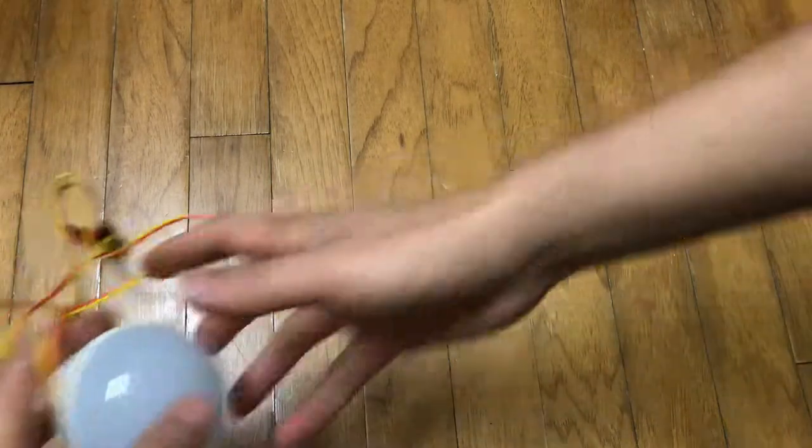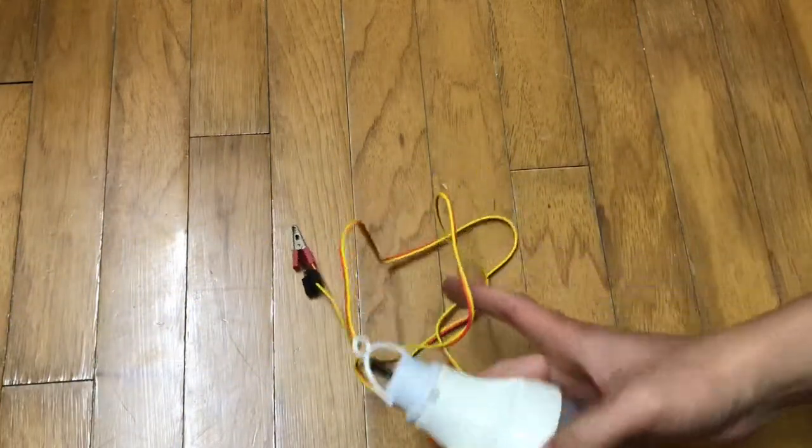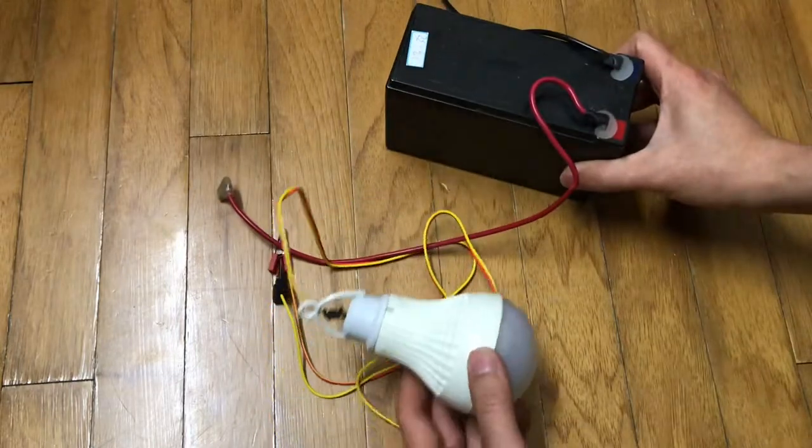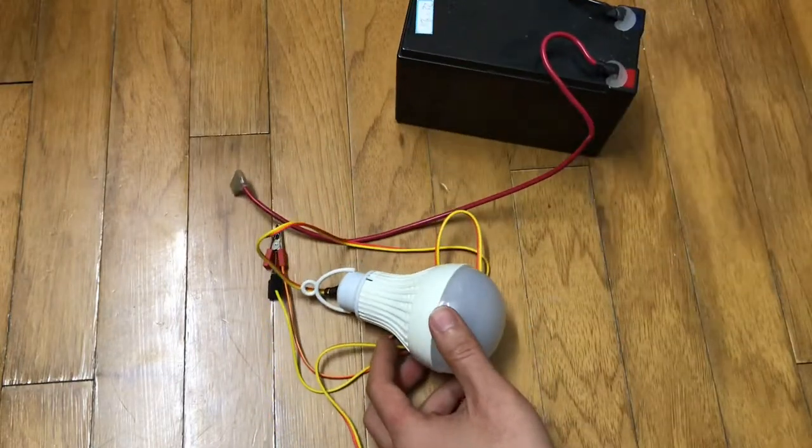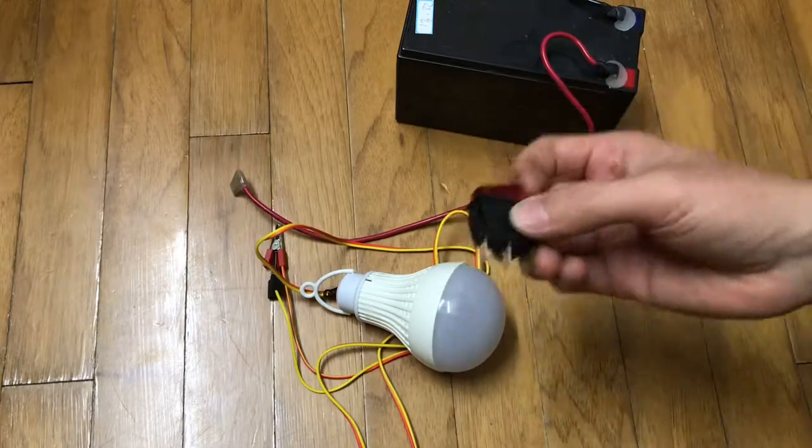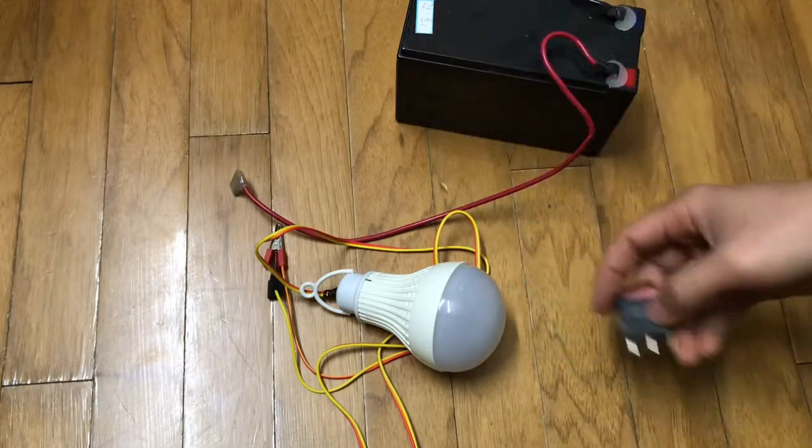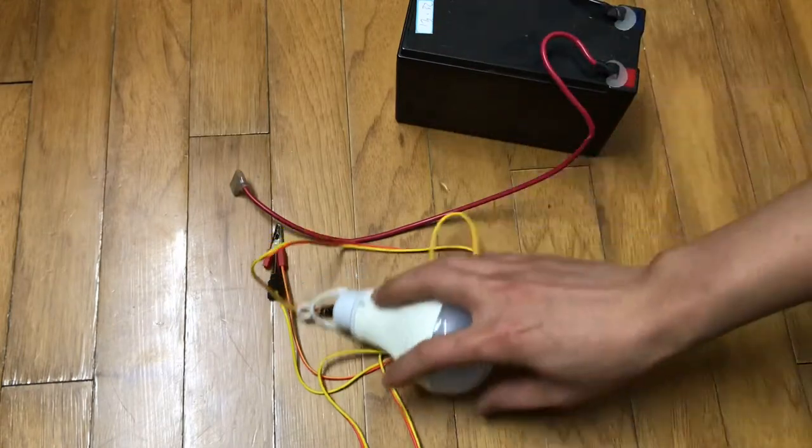Hello, today I'm going to show you how to use this 12-volt light bulb with this battery. I also have a switch, and I'm going to show you how to connect these three things together so we can have a light for camping or fishing at night.